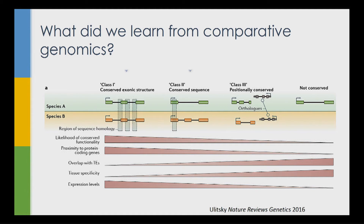The more common case — together around 1,000 lncRNAs in mammals — are cases where one region has some sequence conservation but the rest of the RNA evolves quite rapidly, acquiring or losing exons. In these cases, the RNA may act in cis in the context of the chromatin region where it's produced. And then there is a long tail of poorly conserved RNAs, further from other genes, overlapping more transposable elements, expressed in a more tissue-specific manner. I'm quite skeptical about how many of these are functional.